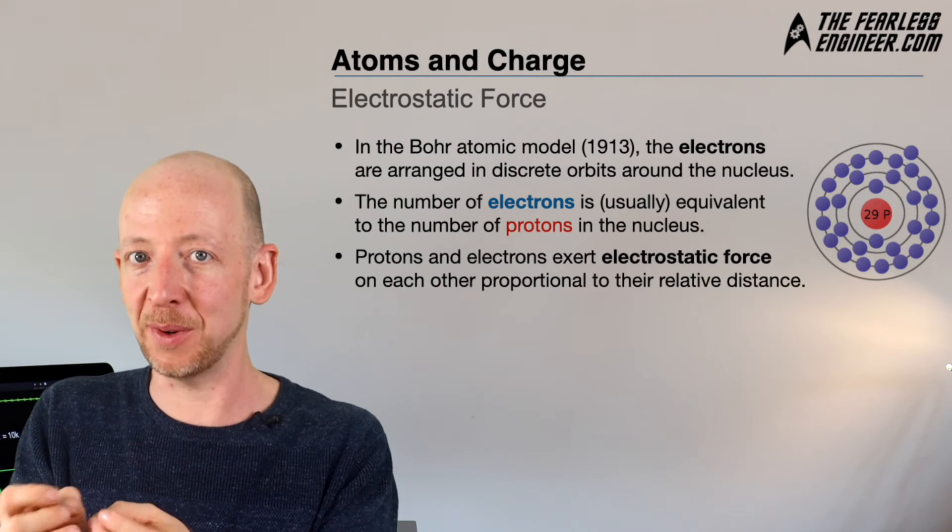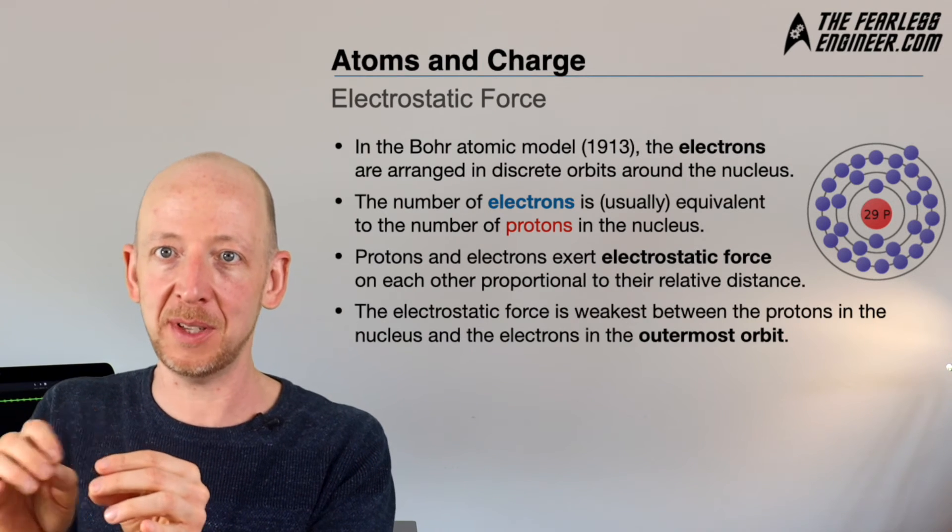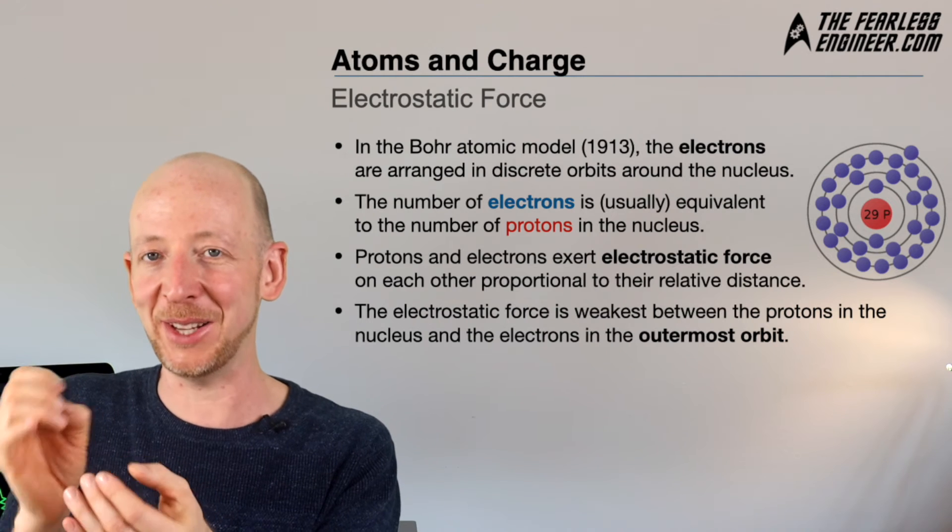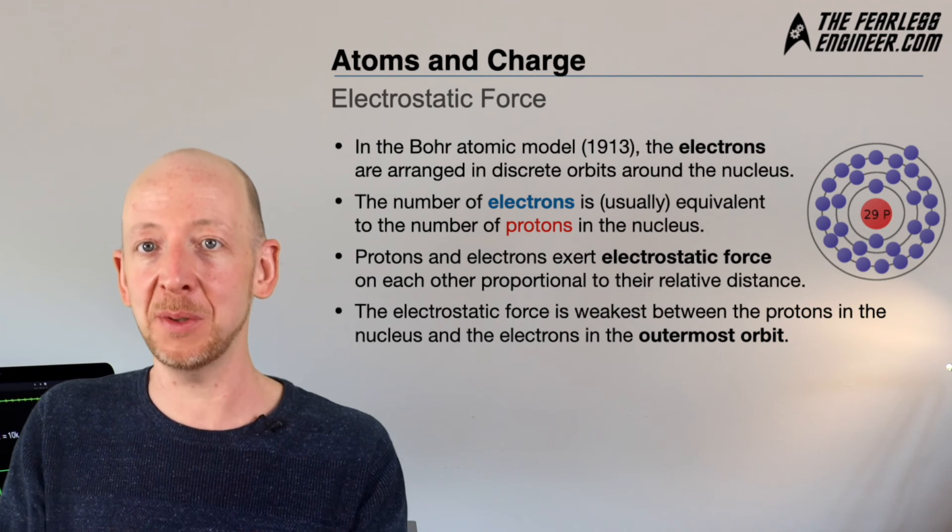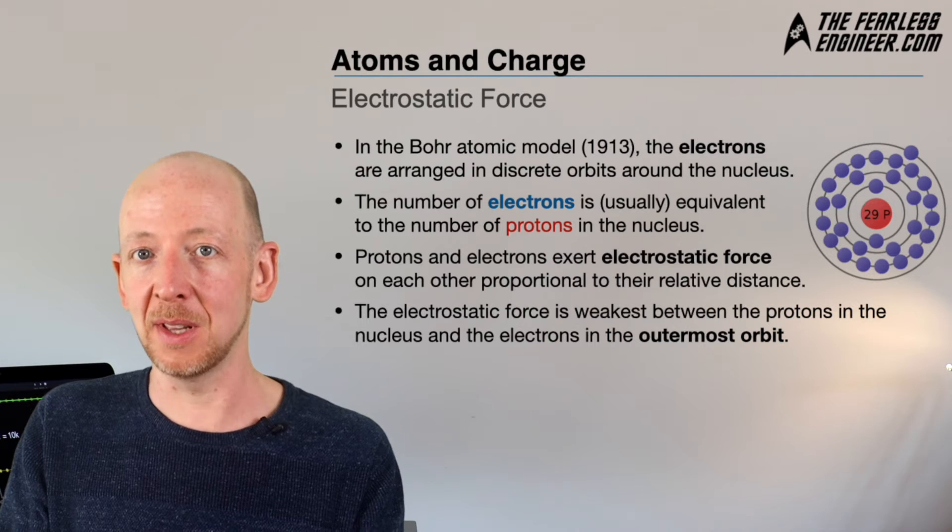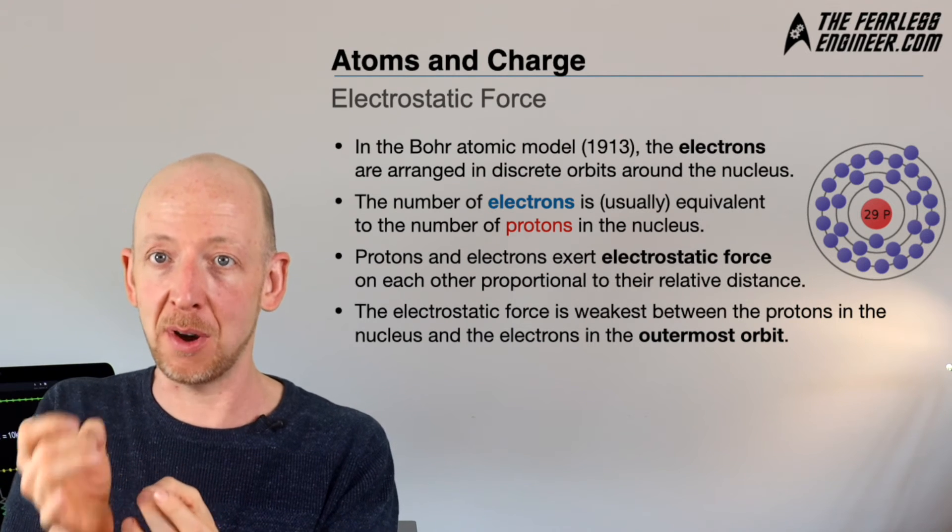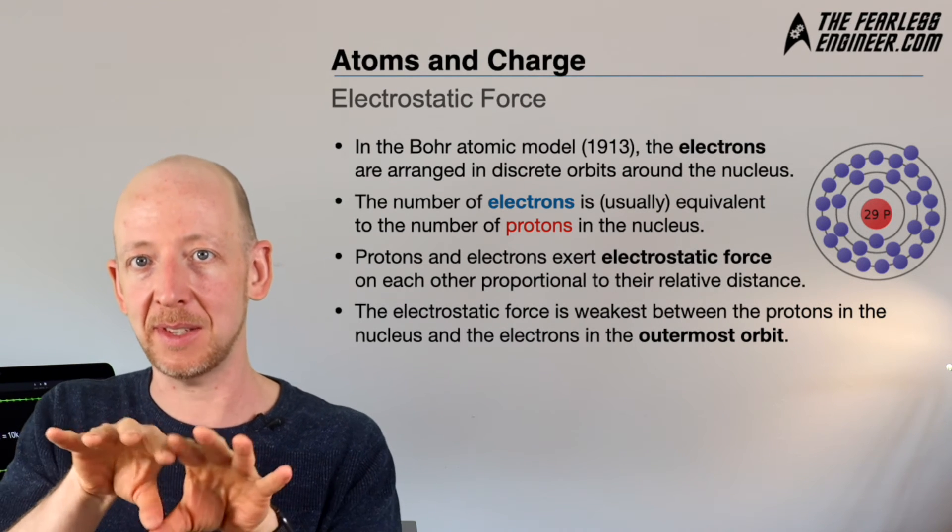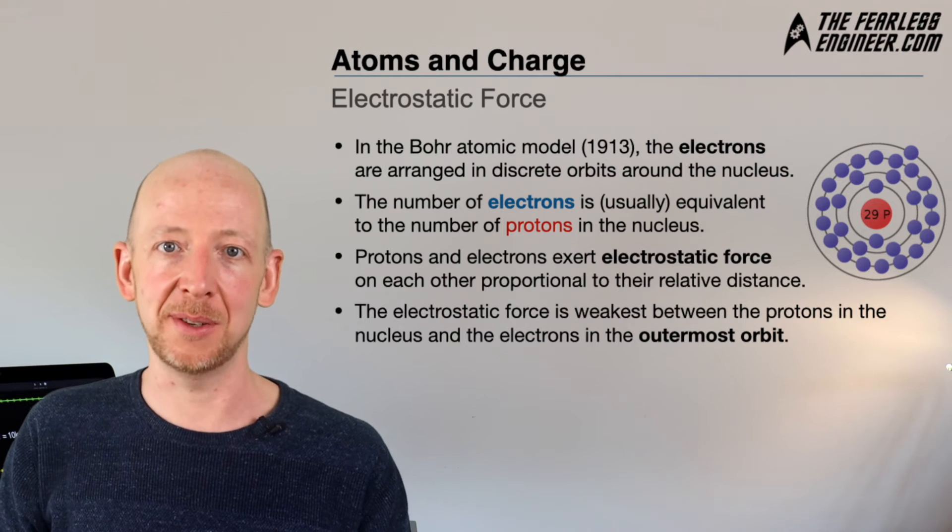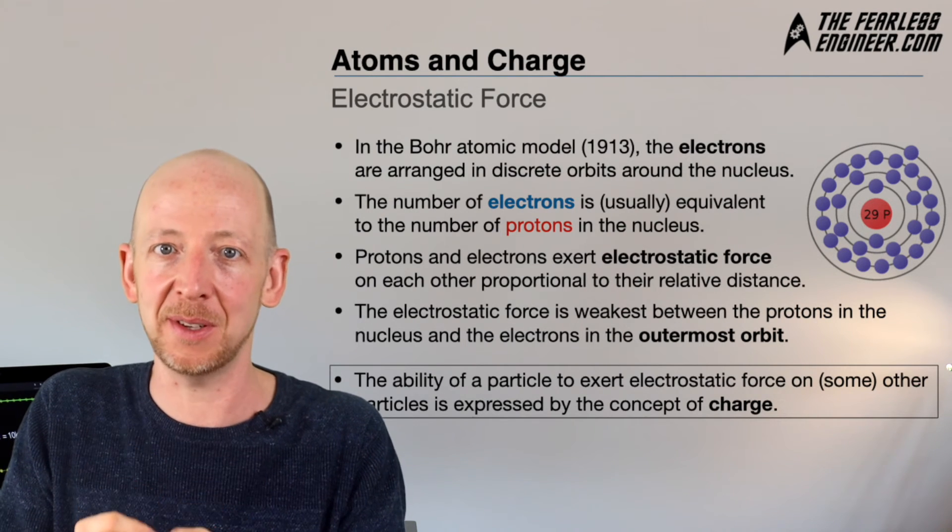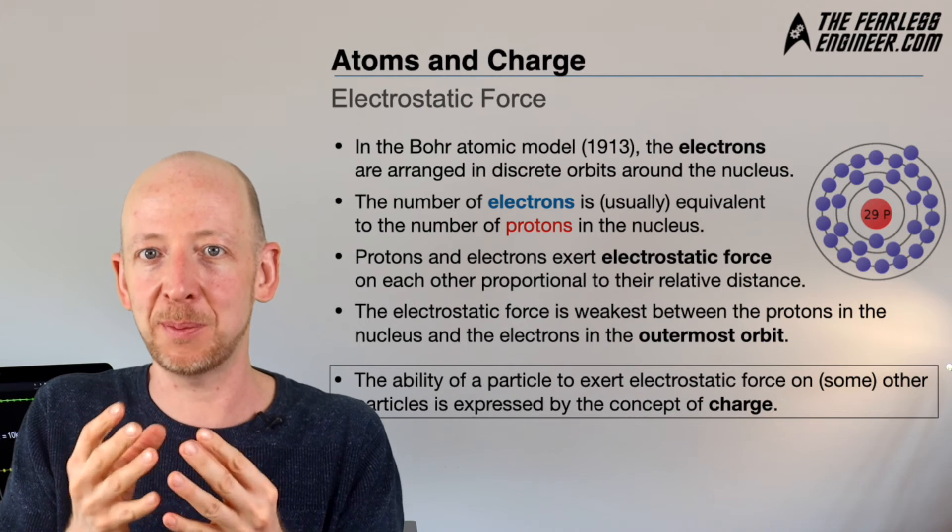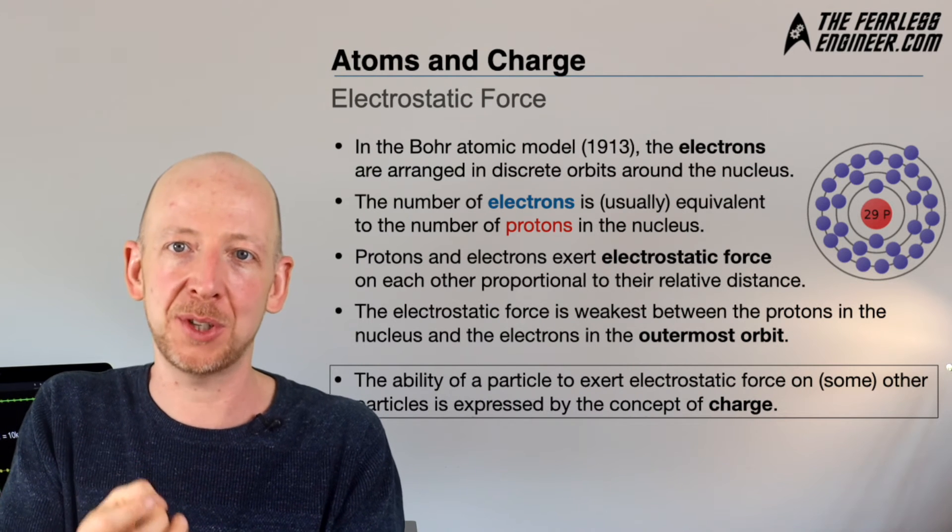Therefore, the force is weakest for the electron on the outermost perimeter. In the upper right, you can see this single electron in the outermost ring. In the innermost orbit, the electrostatic force is strongest. The ability of a particle to exert an electrostatic force on other particles is expressed by the concept of charge, which is fundamental to the workings of every electronic device.